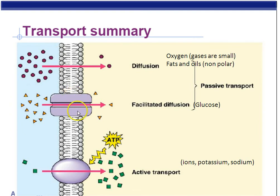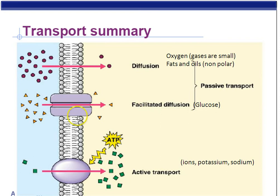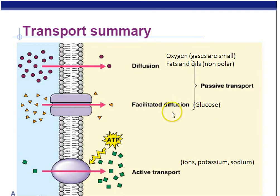The protein channel here allows bigger things like glucose — sugar, C6H12O6, a 24-atom molecule — to move in from high to low concentration. If you require the help of a protein channel, we call that facilitated diffusion. These are both types of passive transport, or transport that does not require any energy by the cell.